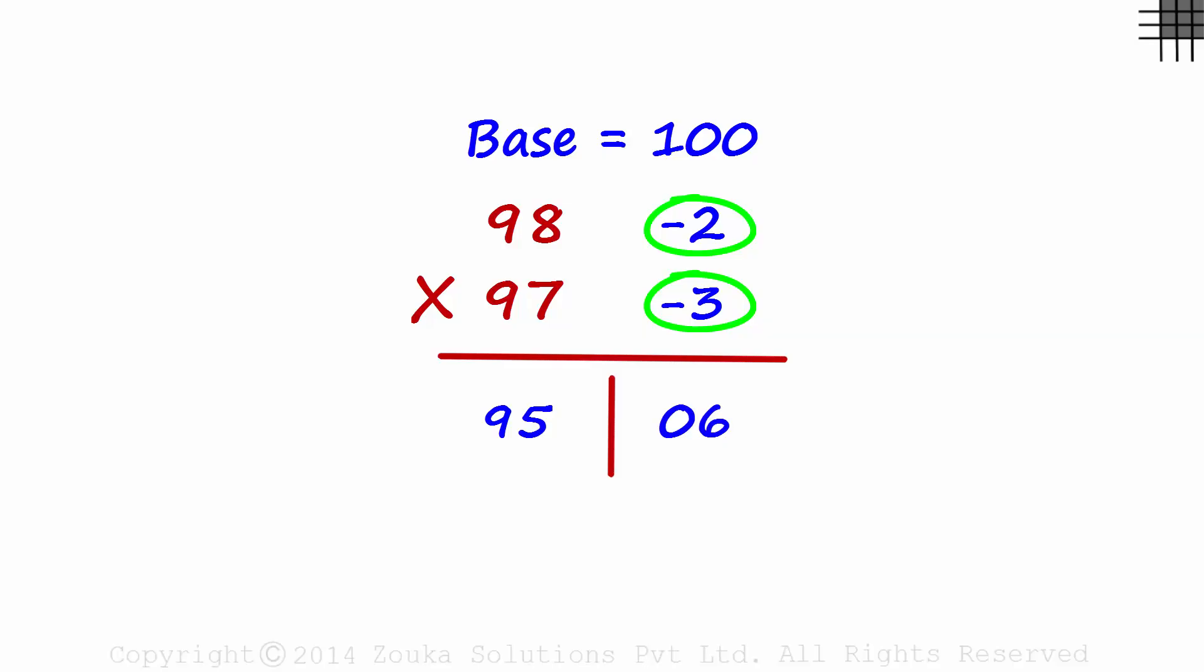We have seen examples like 98 times 97 where both numbers were below the base. The technique to multiply numbers like this was very simple. Find the base, find the deviations, find the sum of any of the diagonal numbers, find the product and bingo! We have our answer!